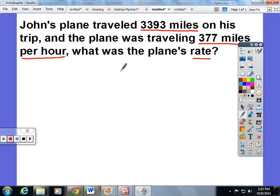John's plane traveled 3,393 miles on his trip, and the plane was traveling 377 miles per hour. What is the plane's rate? So again, the kids are encouraged to use the distance formula. Distance equals rate times time. They have to identify the distance, the rate, and the time from the word problem. Now, 3,393 miles. It doesn't say miles per hour, so I know this is a distance.